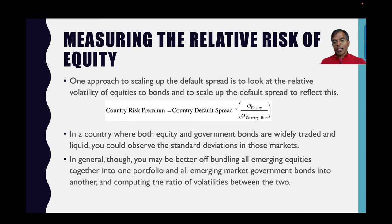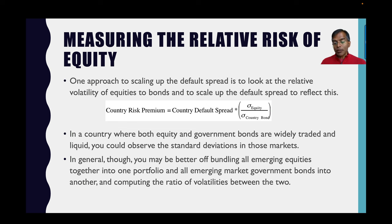I also offer a second option for the 75 countries where a sovereign CDS spread is available: instead of scaling up the country default spread by this blunt ratio, I look up the sovereign CDS spread for the country and apply the scaling-up ratio to it. Both numbers are reported in this data set. The country risk premium is the additional equity risk premium for the country — either based on the ratings-based default spread or the sovereign CDS spread — and the equity risk premium for the country equals that country risk premium plus the US equity risk premium, which is the mature market premium.